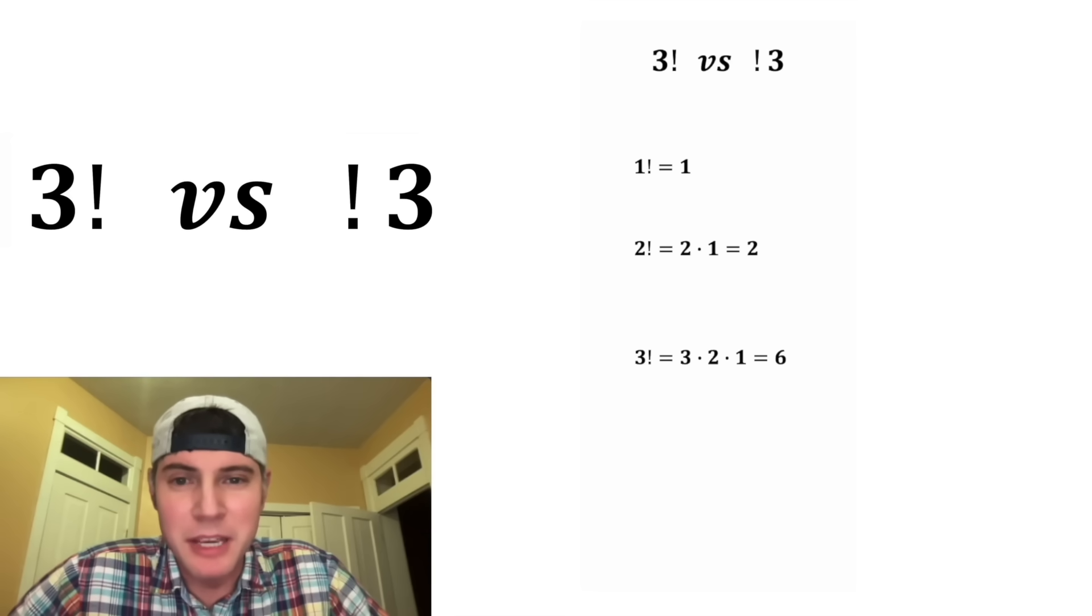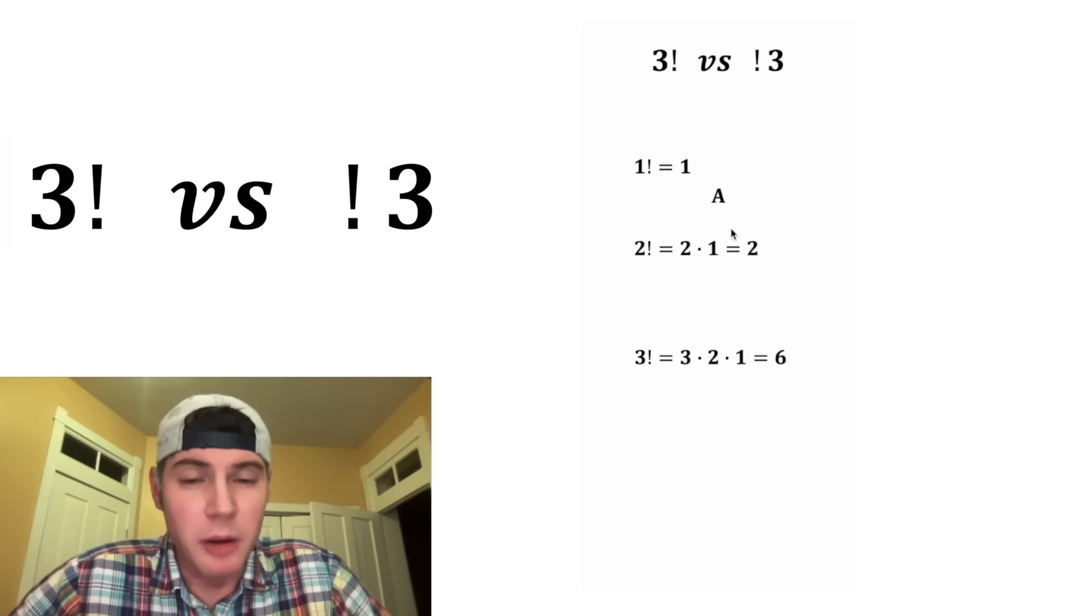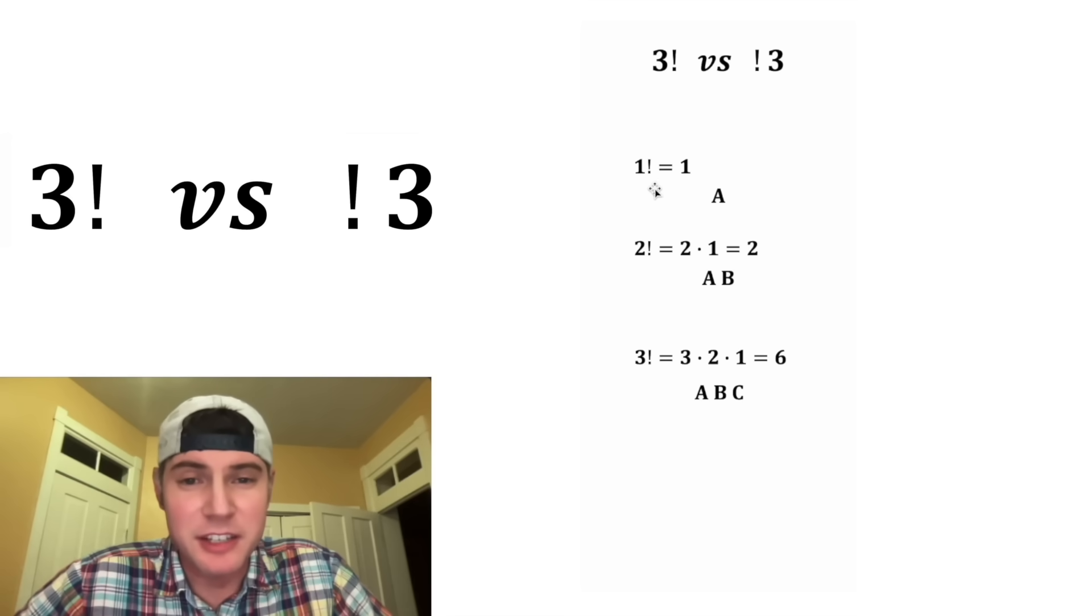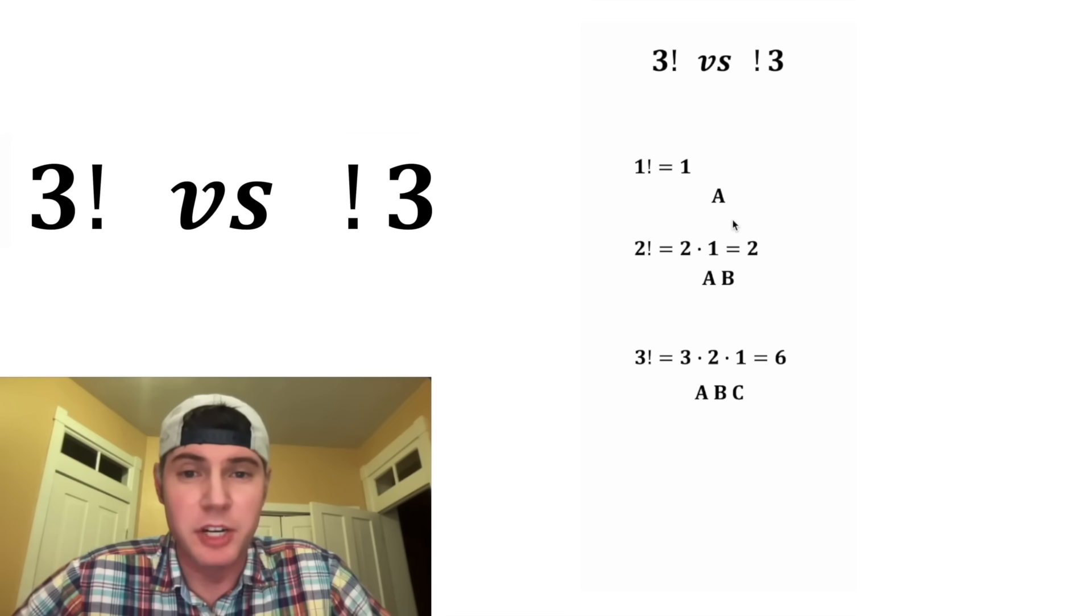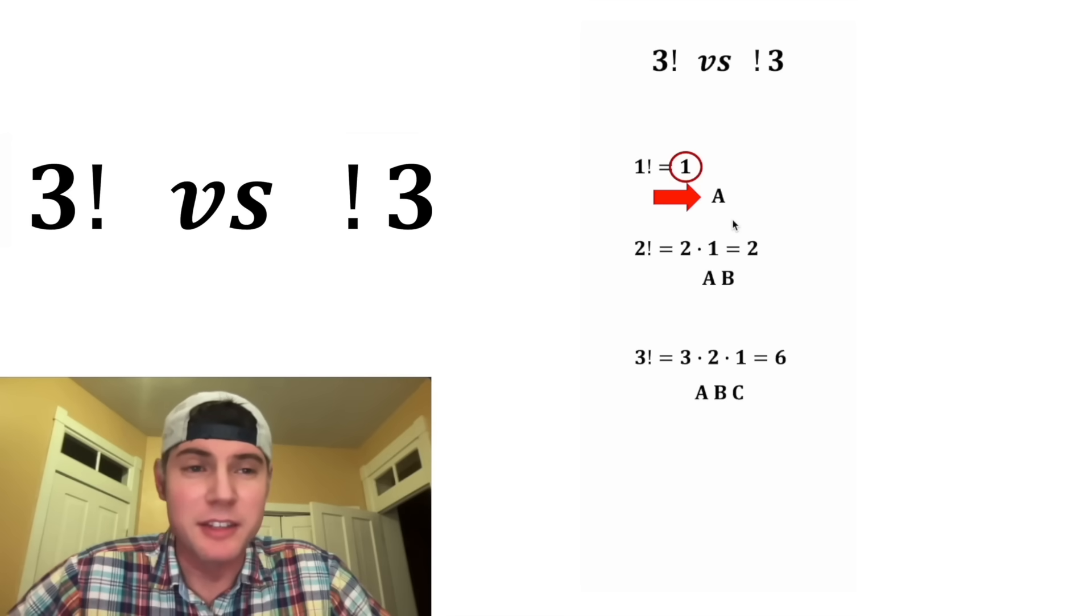And to get a deeper understanding of what they mean, 1 factorial, we're going to look at 1 object. For 2 factorial, we look at 2 objects. And for 3 factorial, we look at 3 objects. And the factorial is asking, how many ways can we arrange this 1 object? Well, there's only 1 way to do it. And that's it right there. So that's why this is 1.